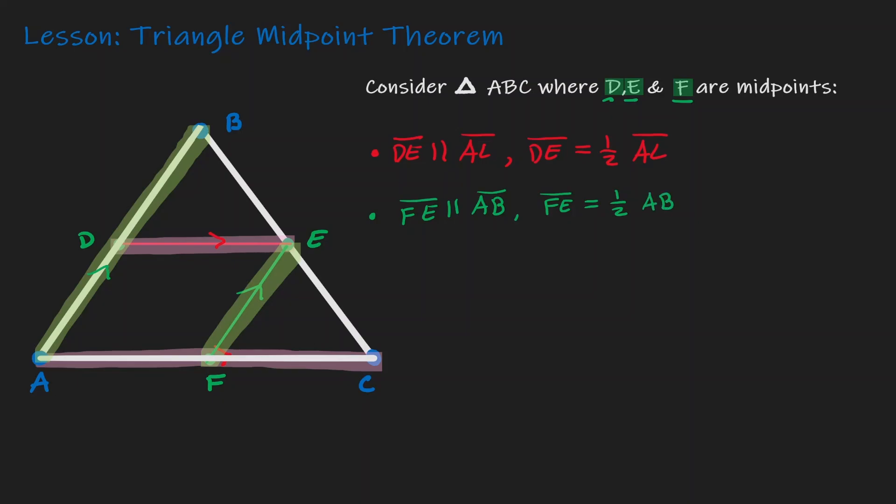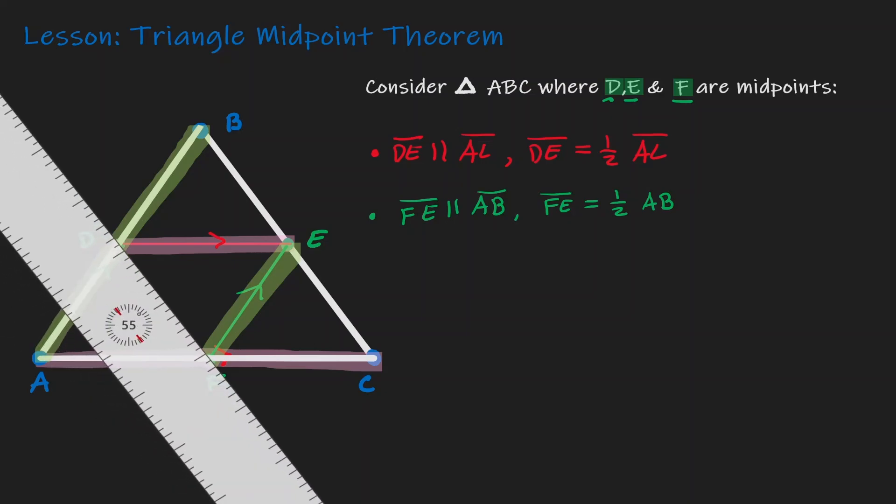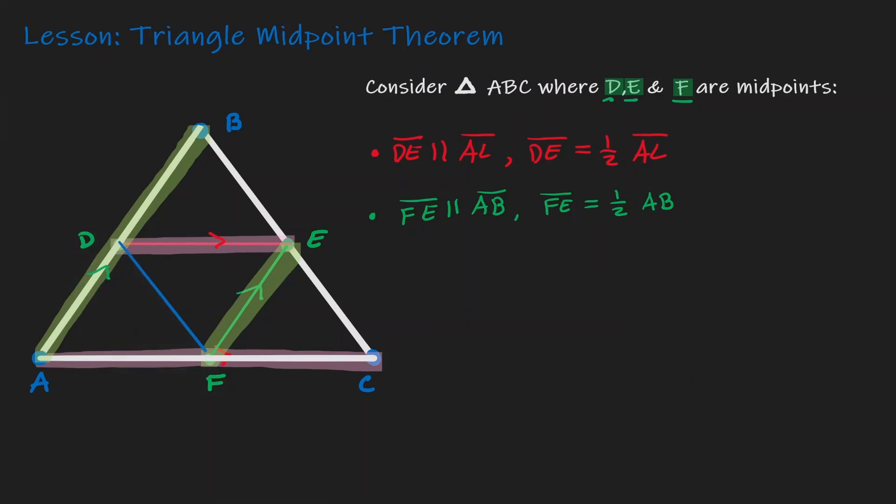And the same will still hold true if we connect the other two midpoints that we haven't connected, which in this case is DF. So let's connect them. If we connect these midpoints, then that line segment that we have created, which in this case is DF, has a special relationship with its opposite side, which is BC.